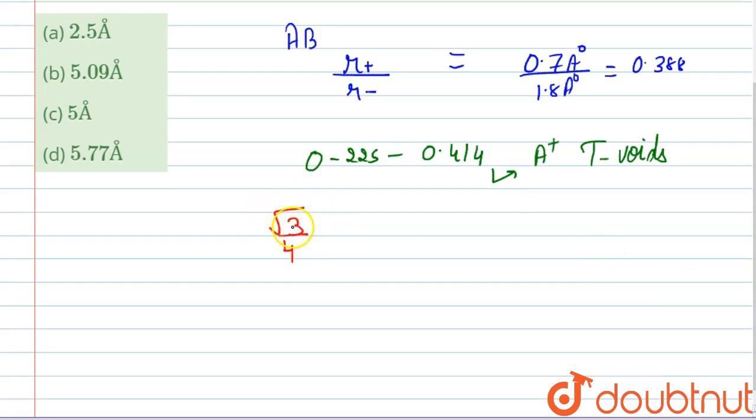So √3/4 times the edge length equals the radius of cation plus radius of anion. This is the equation for tetrahedral voids.